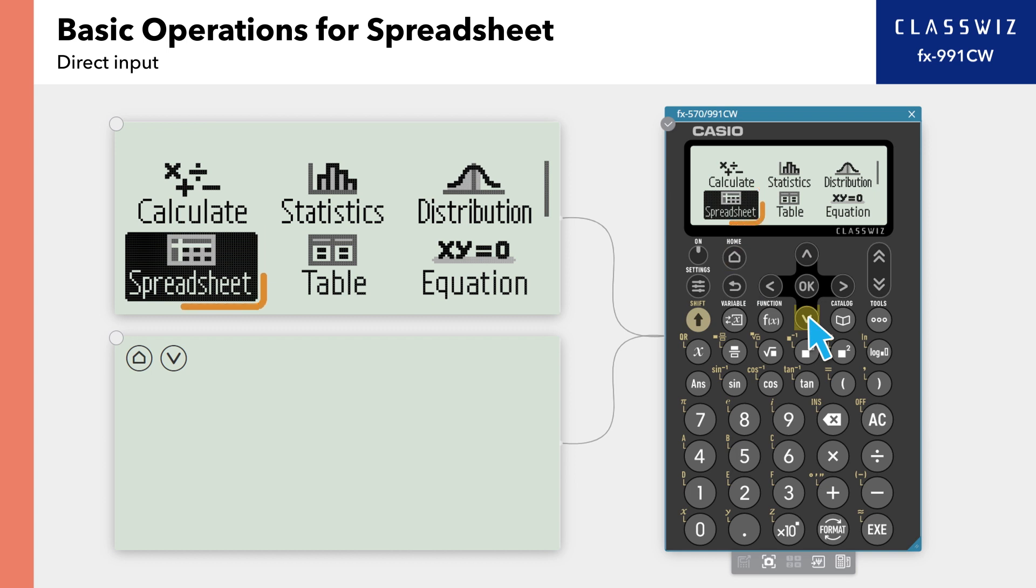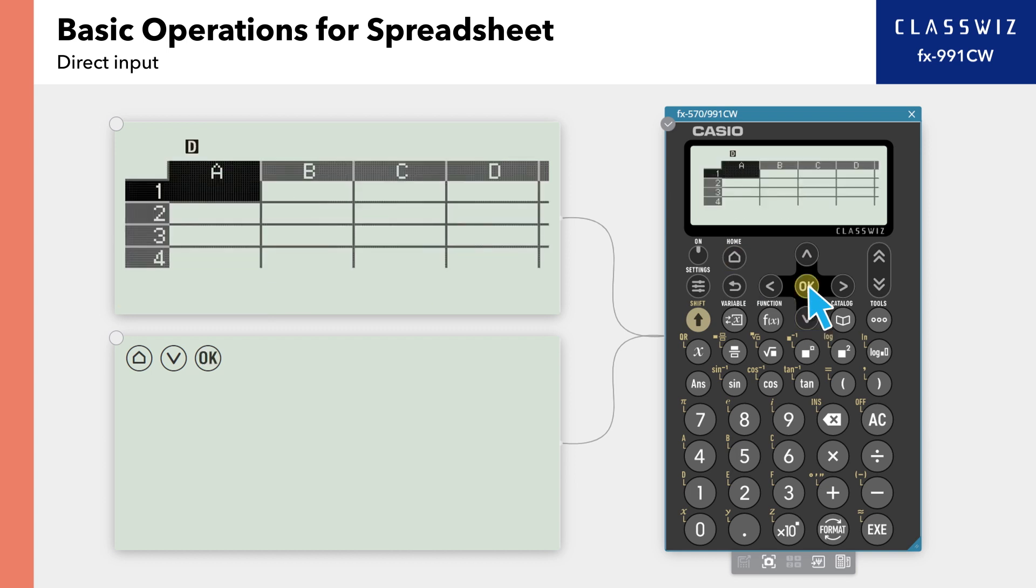Press Home, then select Spreadsheet. Here, you will see a table with alphabetic columns and numbered rows. Since the cell is at the intersection of A and 1, we call it cell A1. There are up to 45 rows and 5 columns A through E.